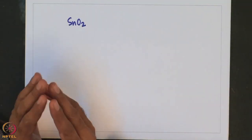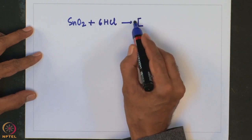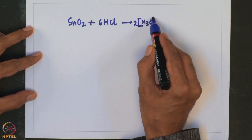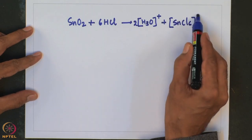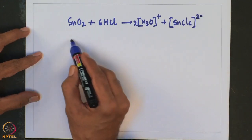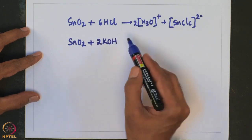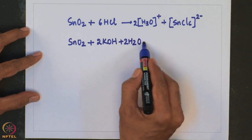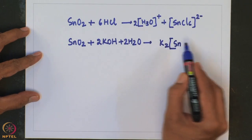SnO2, with tin in the +4 oxidation state, is soluble in many acids, but it exhibits amphoteric behavior and also reacts with alkalis. Reaction occurs in strongly alkaline media to give a stannate. For example, SnO2 when treated with hydrochloric acid it forms hexachlorostannate. Similarly, when treated with KOH in aqueous medium, it gives hexahydroxystannate.